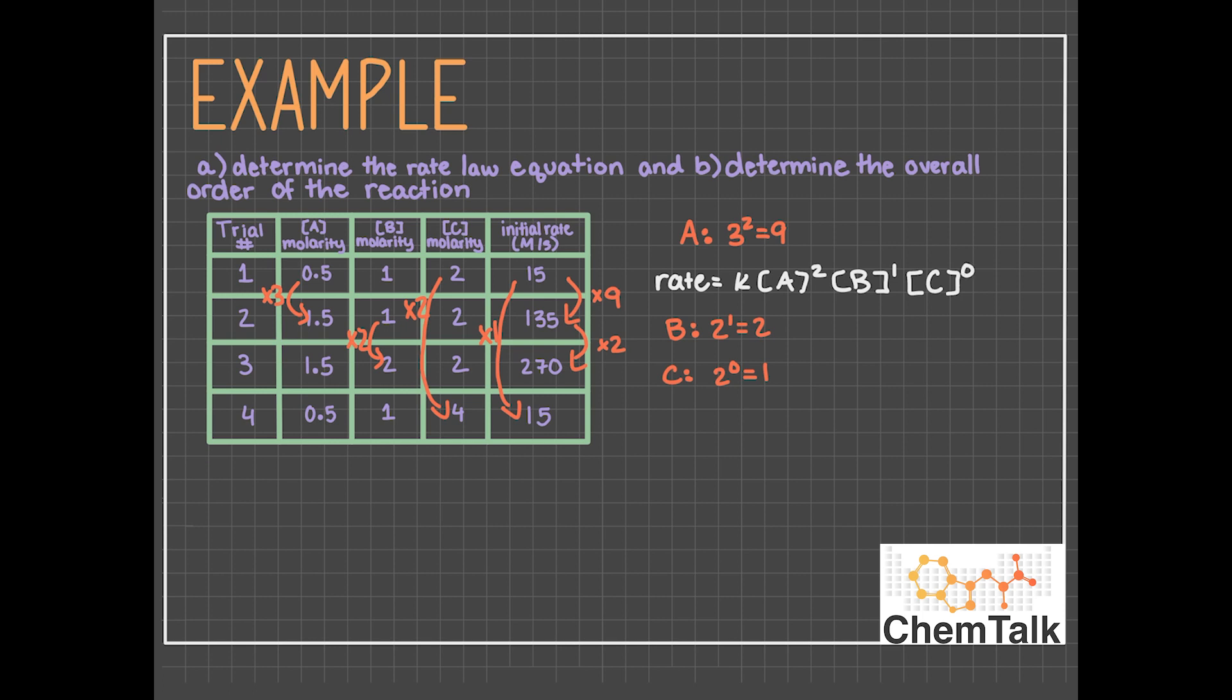Now that we've done this, let's solve for K. We can substitute the values from trial 1 and isolate K. So when you do this and you solve, K will equal 60. So now we've written the rate law, so we need to determine the overall order. If you remember from before, overall order is the sum of all the orders. So 2 plus 1 plus 0 equals 3. So our overall order for this equation is 3.